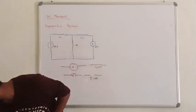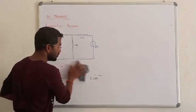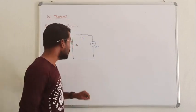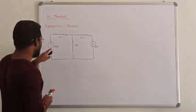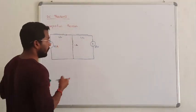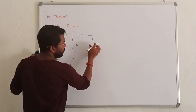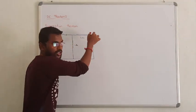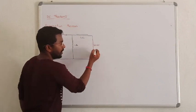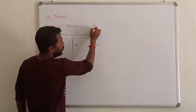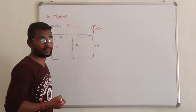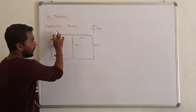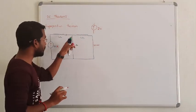Now, how many sources are given? In our case, we have two sources. While applying superposition, we have to activate only one source at a time. Out of the two sources, let me activate the 10A current source first. The two voltage sources have to be deactivated — deactivating the voltage source means short circuit, giving zero voltage.